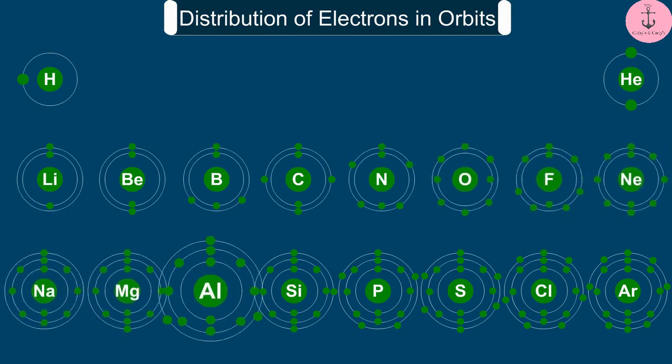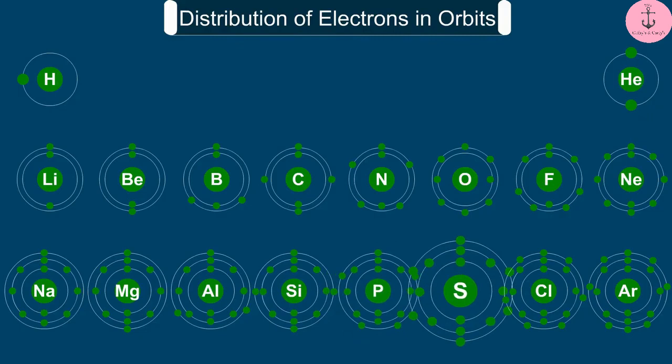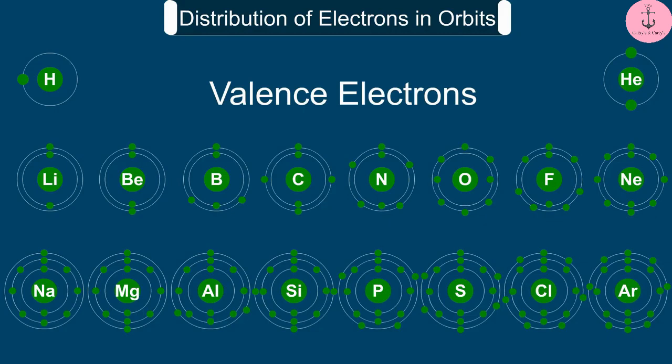The electrons present in the outermost shell of an atom are known as the valence electrons. We also know that the outermost shell of an atom can accommodate a maximum of 8 electrons.